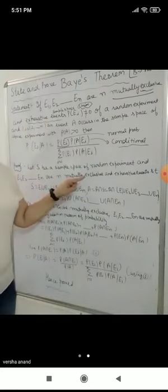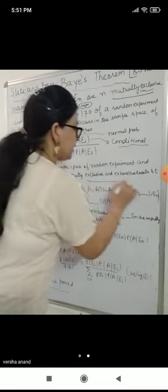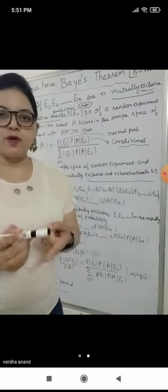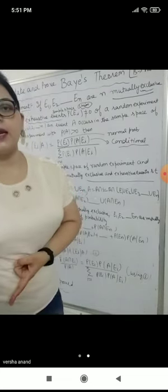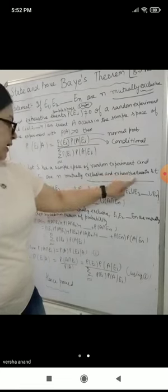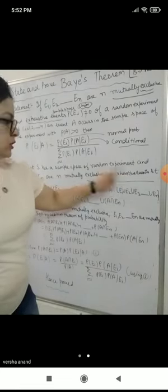When we put a condition in a probability then it is called conditional probability. So for the proof, let S be a sample space for the random experiment according to the statement, and E1, E2, up to En are mutually exclusive and exhaustive events. In two events we have no same thing with E1, E2, E3 — mutually exclusive means no common elements.